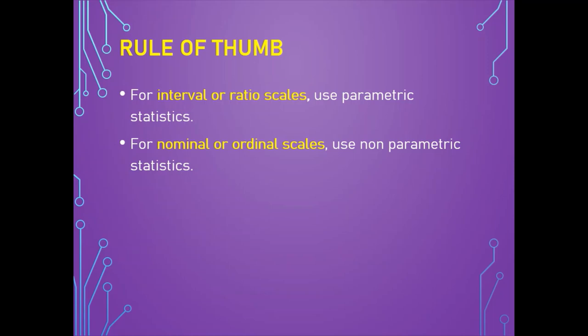Other factors indicating that a non-parametric test should be used include: one or more assumptions of a parametric test have been violated (e.g., no bell-shaped curve), the sample size is too small to run a parametric test, the data has outliers that cannot be removed, or you want to test for the median rather than the mean — which may be preferred with a very skewed distribution.